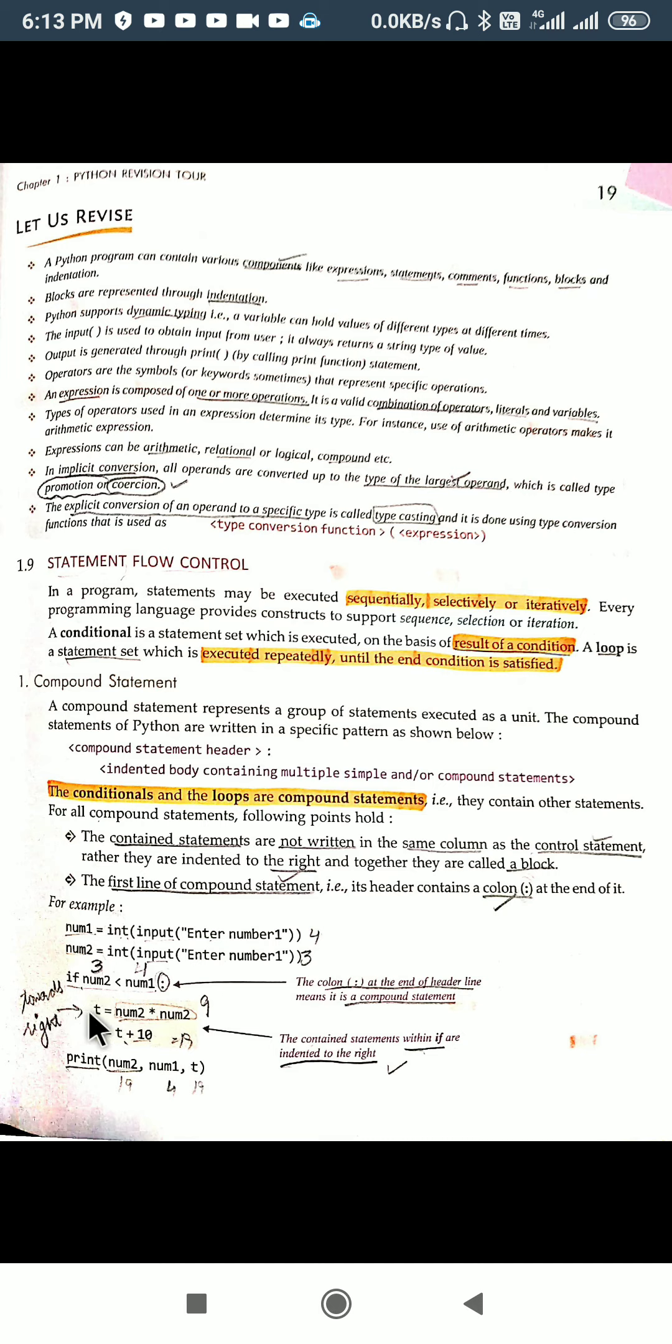They will be towards the right of this compound statement. By default, whenever you are pressing this colon, ultimately by default they will come with few indentation, three or four spaces. This is done by the Python interpreter automatically. You are not supposed to do this. You just need to write this colon. When you write this colon, it will give three, four to five spaces.